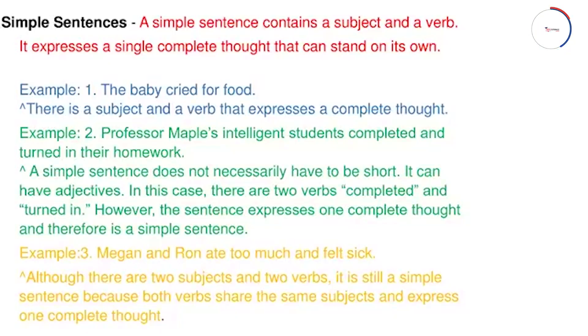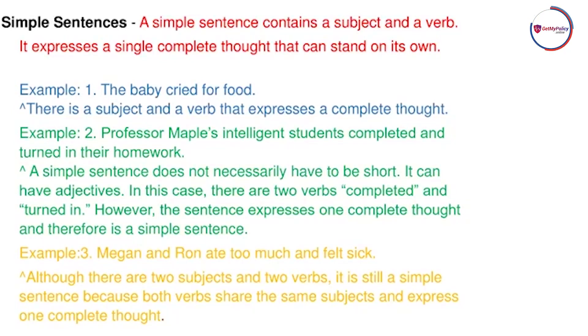The length of the sentence and the type of the sentence are two very different things. Now, what is a simple sentence? A simple sentence consists of one subject and one verb — it expresses a single complete thought and can stand on its own. Basically, one independent clause is one simple sentence. For example, 'The baby cried for food' — subject is 'the baby,' verb is 'cried,' and 'food' is the object.